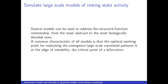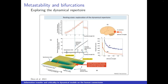The interesting thing is that several models can be used to address this structure-function relationship, from the most abstract to the most biologically detailed ones. The common characteristic of all models is that the optimal working point for explaining the emergence of large-scale correlated patterns is at the edge of instability — what in physics we are familiar with as criticality. We can call it bifurcation, or the balanced state.